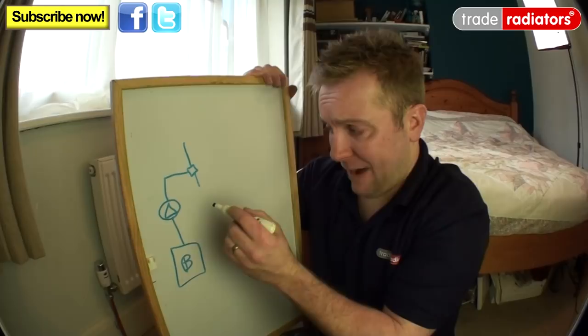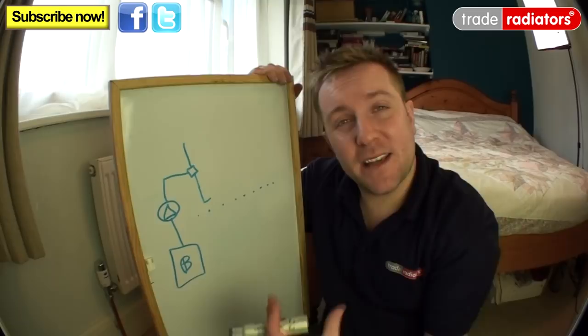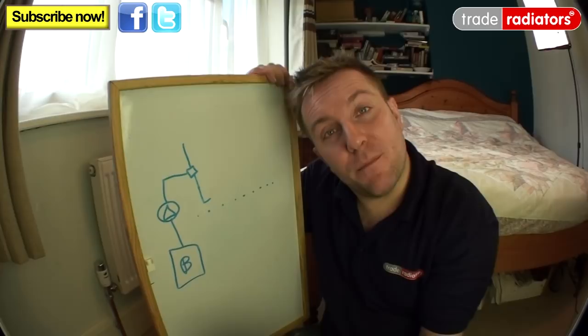If we divide the house into two storeys, hot water prefers to stay high up in the system. It's like anything that's hot, like a hot air balloon, that would like to rise up to the top. For that reason it's most important that we balance the radiators at the top of the system.